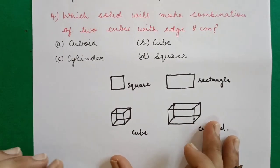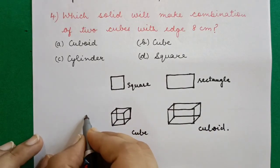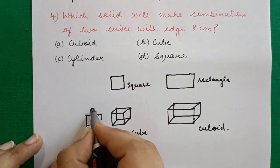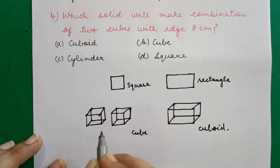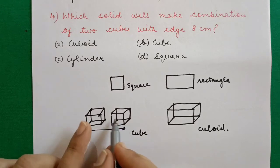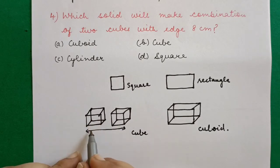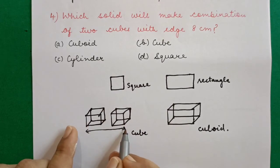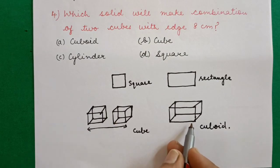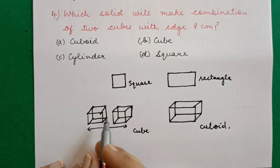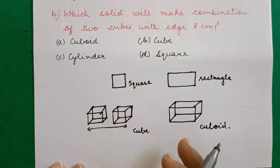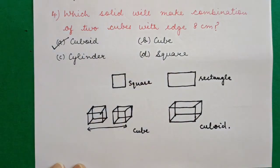So if we take one cube and join another cube to it, the combined figure has unequal dimensions — the length becomes double while the other sides remain unchanged. Therefore when two cubes are combined, a cuboid is formed. Option A is the correct answer.